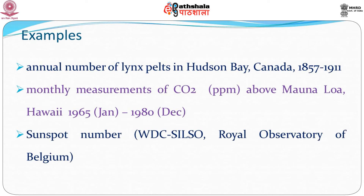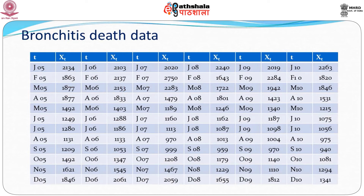Another famous dataset is the sunspot numbers, observed by various laboratories including the Royal Observatory of Belgium. As you can see, time series data can be monthly, quarterly, hourly, or minute by minute. You need to define what your time points are, and then you can have a series where you observe the phenomena at equidistant time points.